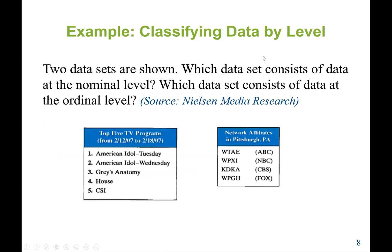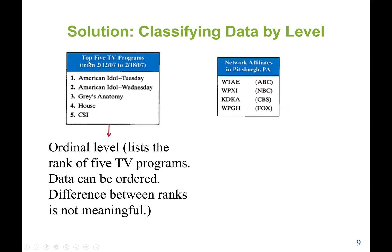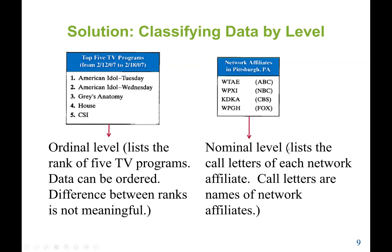Here is an example classifying data by level. The first data set is the top five TV programs — ranked first through fifth — so that is ordinal level because the data is ordered, though the differences between ranks are not meaningful. The second data set is network affiliates in Pittsburgh, which are listed by call letters, so that is nominal data because they are names.